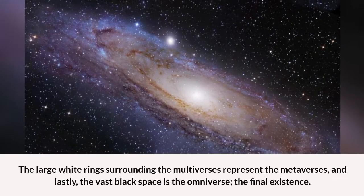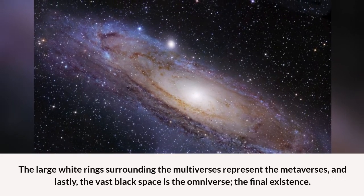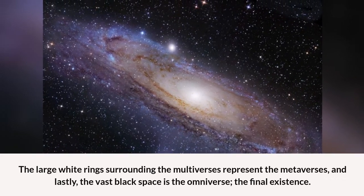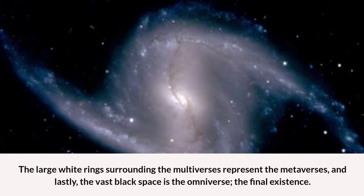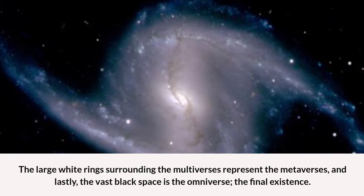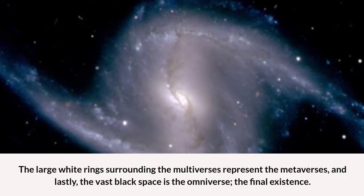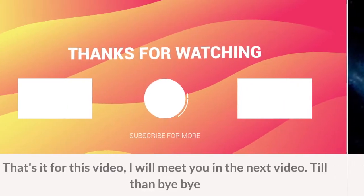The large white rings surrounding the multiverses represent the metaverses. And lastly, the vast black space is the omniverse, the final existence.